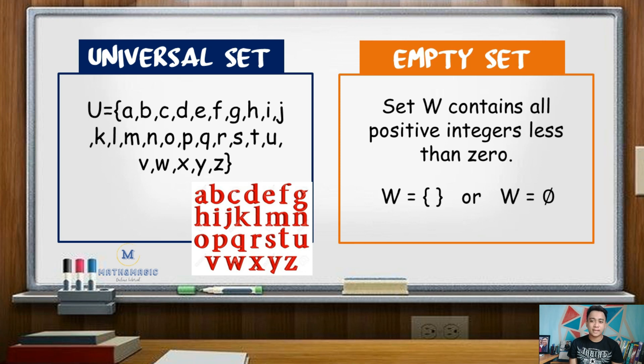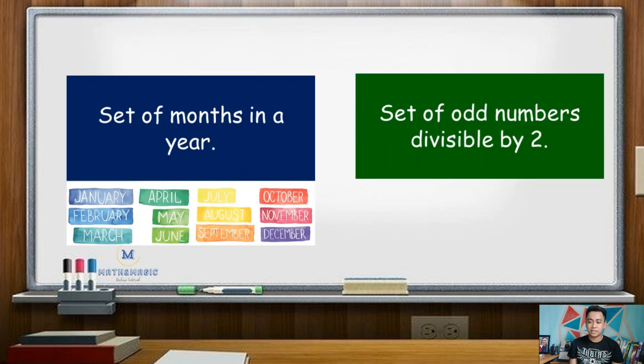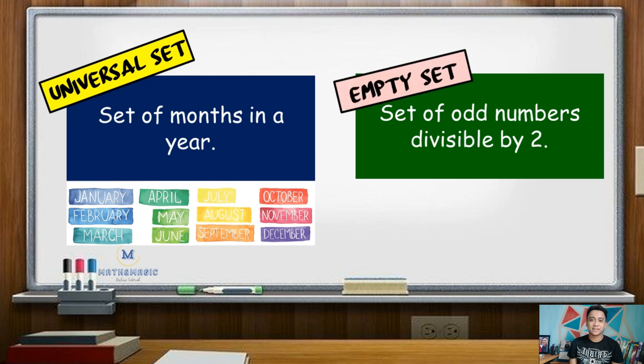Now, can you identify which of these is universal set and null set? Very good! The set of months in a year is a universal set, while the set of odd numbers divisible by 2 is for null set. Remember that odd numbers are the numbers which are not divisible by 2.